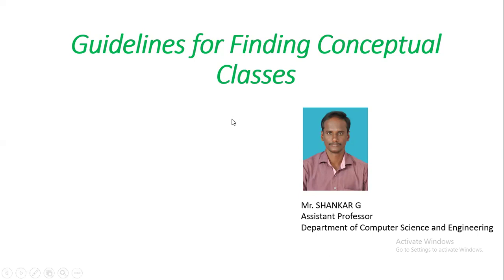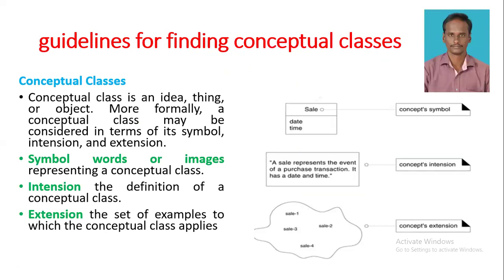Before that, let us discuss what is a conceptual class. A conceptual class is an idea, thing, or object. More formally, a conceptual class may be considered in terms of its symbol, intention, and extension. Symbol refers to words or images representing a conceptual class. Intention is the definition of a conceptual class. Extension is the set of examples to which the conceptual class applies. So we conclude that a conceptual class has a symbol, intention, and extension.